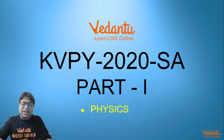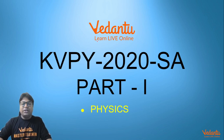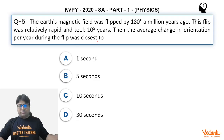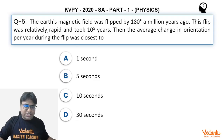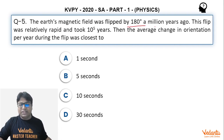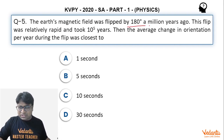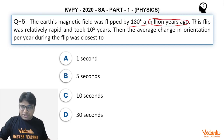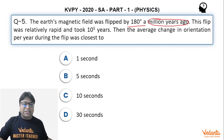Hello students, this is question number 5 of KVPY 2020 SA paper Part 1 Physics. The question says that the Earth's magnetic field was flipped by 180 degrees a million years ago. The information about 'a million years ago' is not useful for us — what is useful is that the magnetic field was flipped by 180 degrees.